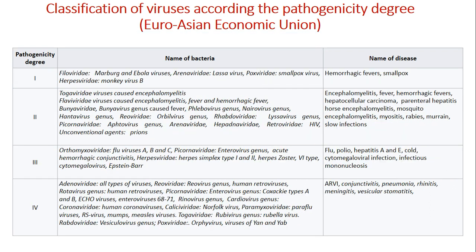The next slide covers the classification of viruses according to pathogenicity degree. The first pathogenicity degree includes smallpox virus causing smallpox, while the fourth degree includes adenoviruses causing conjunctivitis or acute respiratory viral infections.